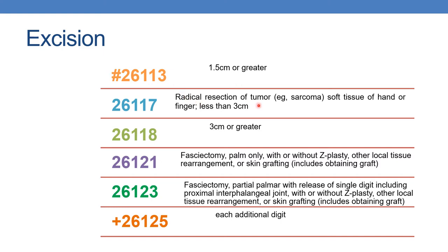The next is radical resection. If the tumor size is less than 3 centimeters, you need to assign 26117. And if the tumor size is 3 centimeters or greater, you need to assign 26118.